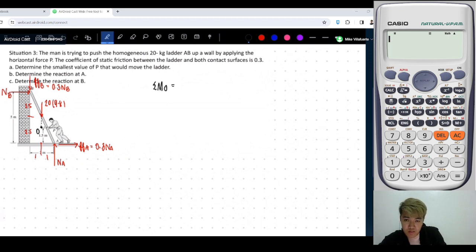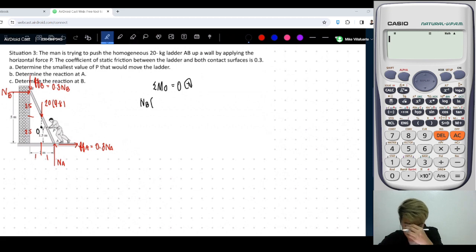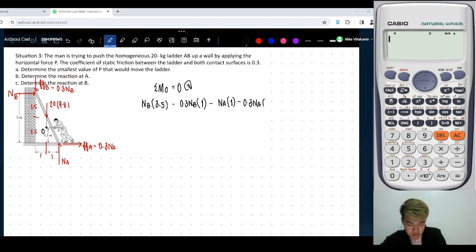What are the forces contributing moments? First, NB. NB multiplied by the moment arm... If 1.5 from the bottom, that is 3.5 from... Okay. Minus 0.3 NB, which produces counterclockwise, so minus, multiplied by the moment arm of 1. Minus NB, which produces counterclockwise, so NB multiplied by 1. Minus 0.3 NB, that is times 1.5.